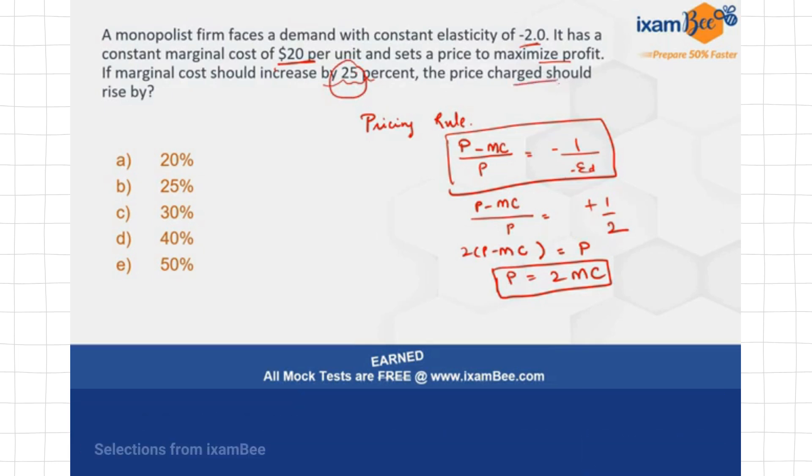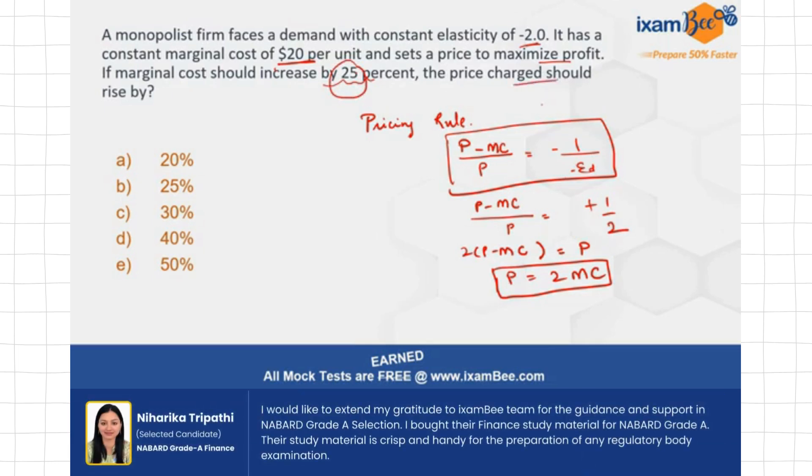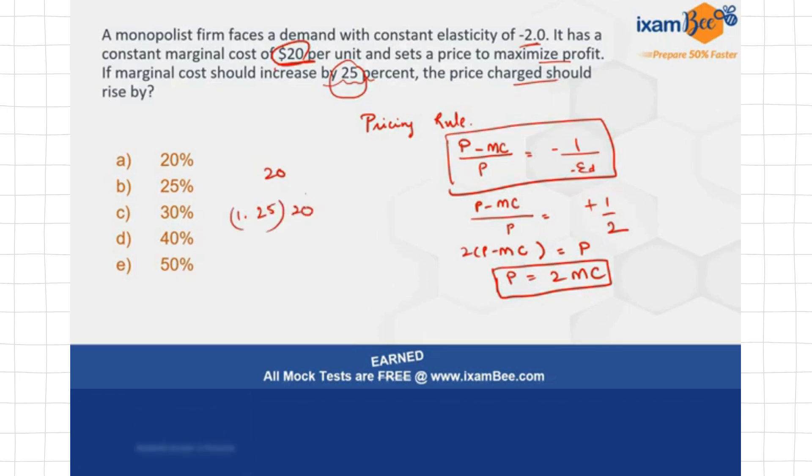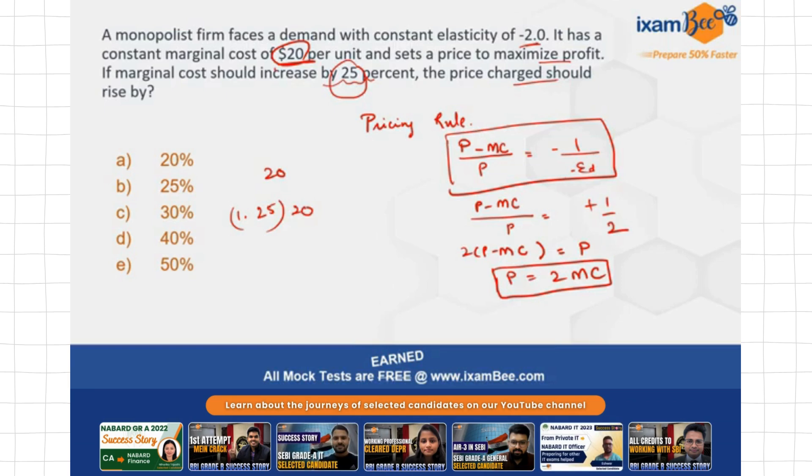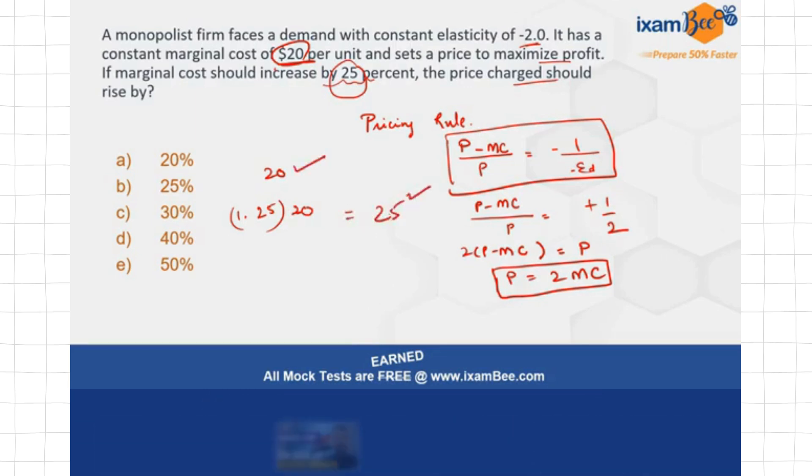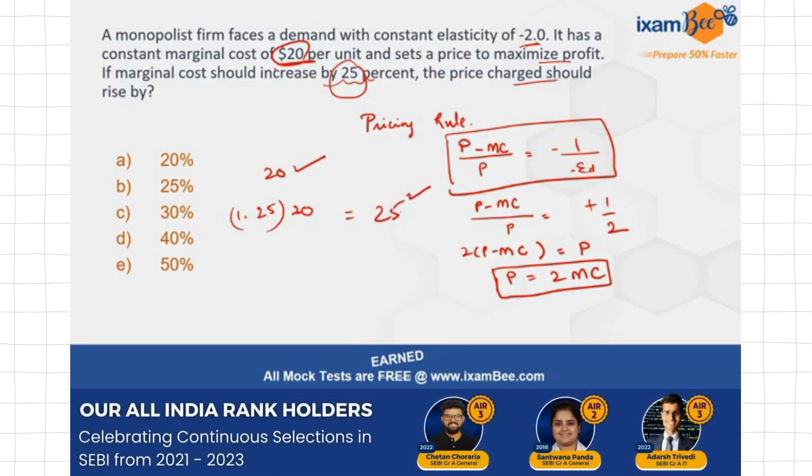So see here, if earlier the marginal cost is 20, now I take 25% of this, so 1.25 times 20, right? If the marginal cost is increasing by 25%, then it's going to be 25 now. From 20 to 25, this is 25% increase.